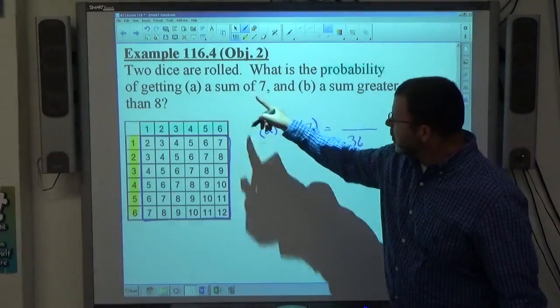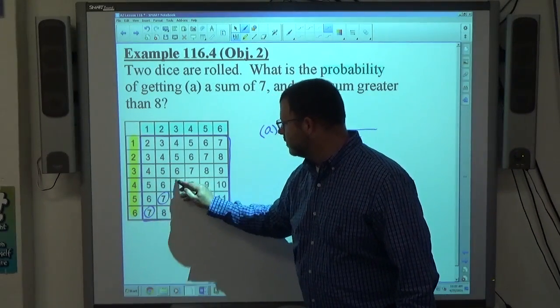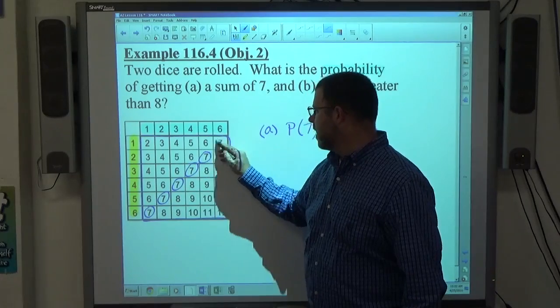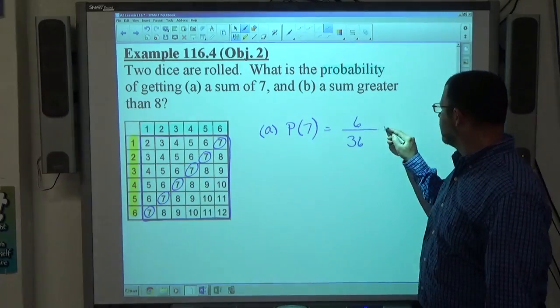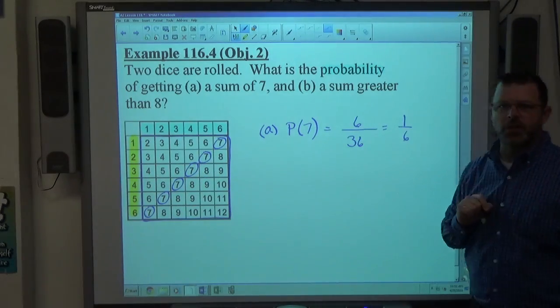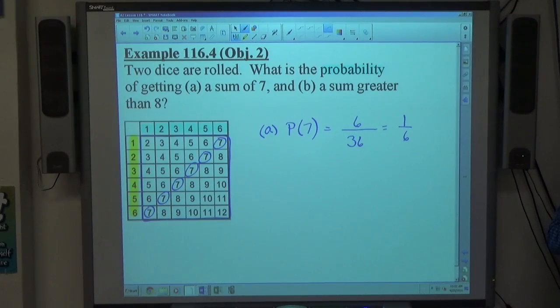So if we want the sum of 7, all we have to do is count up how many 7s there are. And there's 6 of them. And 6 out of 36 reduces to 1/6. So that's the probability of getting a 7 when you roll two dice.